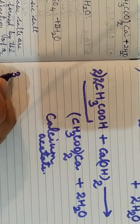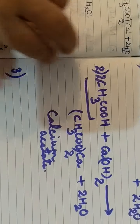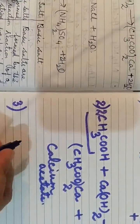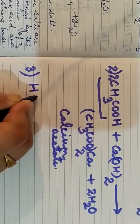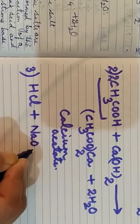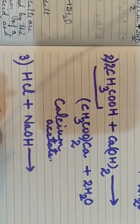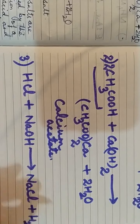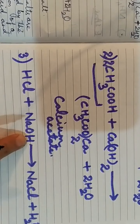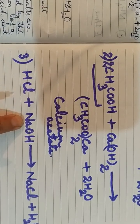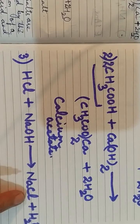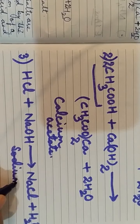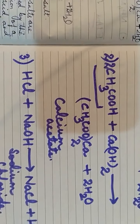The third equation: hydrochloric acid reacts with sodium hydroxide. HCl reacts with NaOH. The product formed is NaCl (sodium chloride) plus H₂O. It is already balanced: 2 hydrogen on each side, 1 Na and 1 Cl on each side.